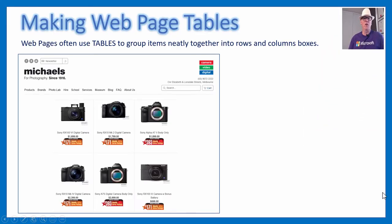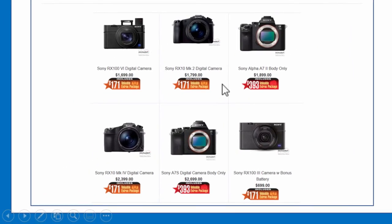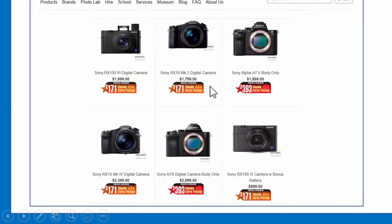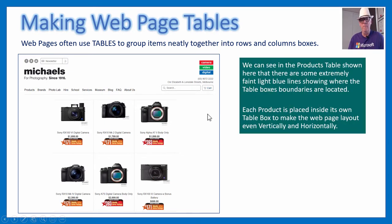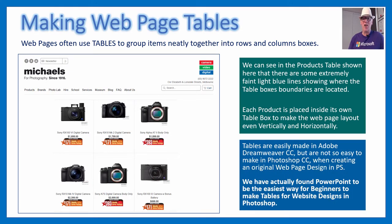Web pages often use tables to group items neatly together. This is one of our favorite camera shops in Melbourne, Michaels. You can see the products all line up in columns and rows neatly. If you look carefully, there are some faint light blue-gray boxes that things sit in — this is called a table. We've got six little boxes showing there. Tables are used for listing products on web pages to make it look a lot neater and tidier.